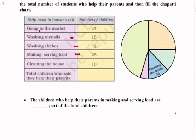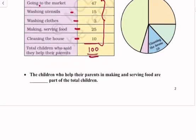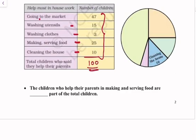And the total children who said they help their parents, so the total number of children who help their parents are 100. We will add this column - 100.